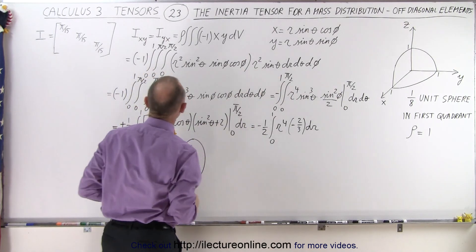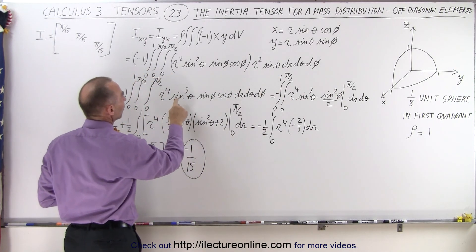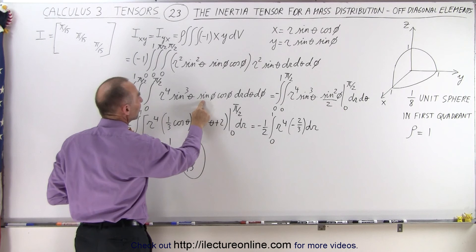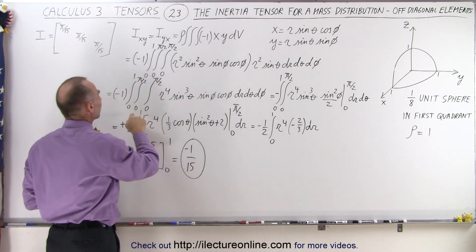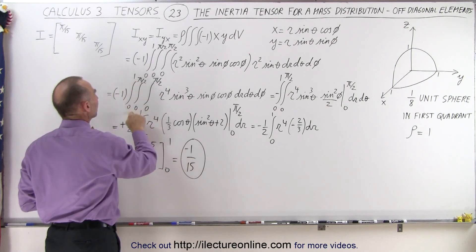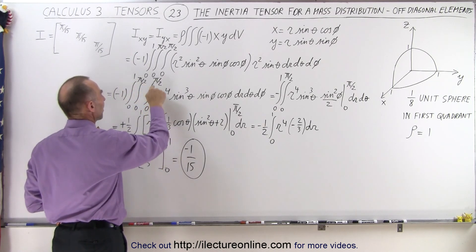So we multiply these together, we end up with an r to the fourth, sine cubed of theta, sine of phi, cosine of phi dr dtheta dphi, and the limits of integration are from 0 to 1, from 0 to pi over 2, and from 0 to pi over 2.